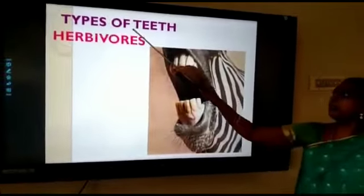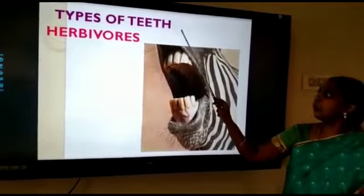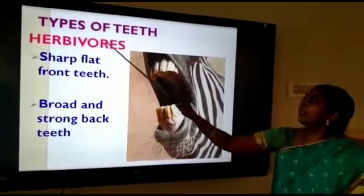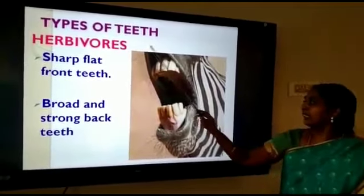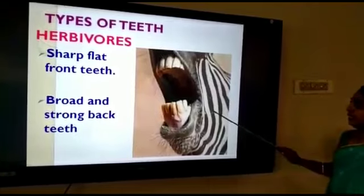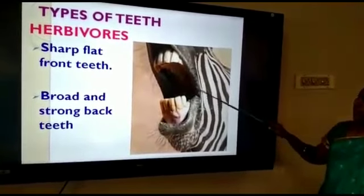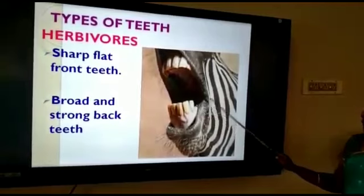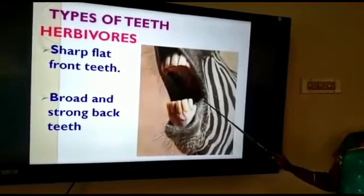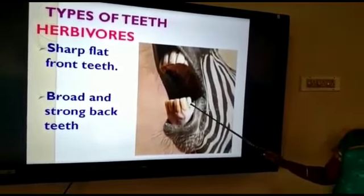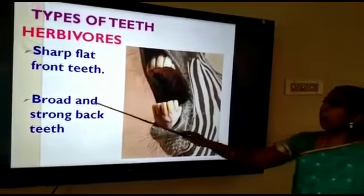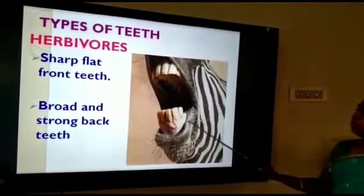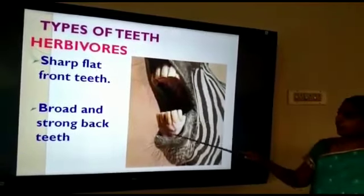Now we are going to see about the types of teeth. First, the herbivores' teeth. See here the zebra's teeth — sharp, flat, front teeth which help them to bite and cut their food. It also has broad and strong back teeth which help them to chew the food.